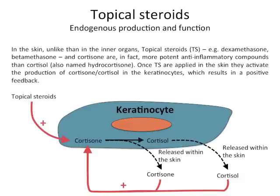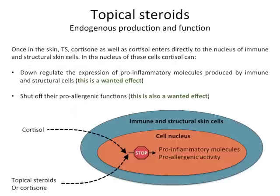Once topical steroids are applied in the skin, they activate the production of cortisone or cortisol in the keratinocytes, which results in a positive feedback. Topical steroids and cortisone, as well as cortisol, enter directly into the nucleus of the immune and structural skin cells. In the nucleus, cortisol can down-regulate the expression of pro-inflammatory molecules produced by the immune and structural cells and suppress the pro-allergenic functions of these cells.